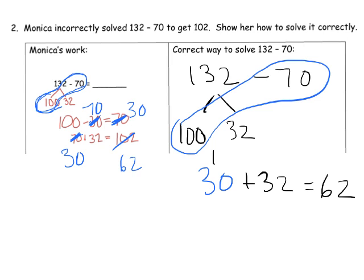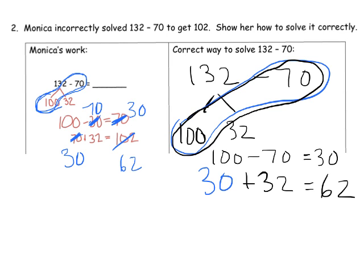So that gives us 30 plus the extra 32, and that equals 62. And really, I should squeeze this in. 100 minus 70 equals 30. That's this part right here. 100 minus 70 is 30, and then we're going to add in the 32. We get 62.